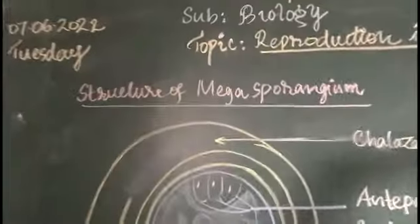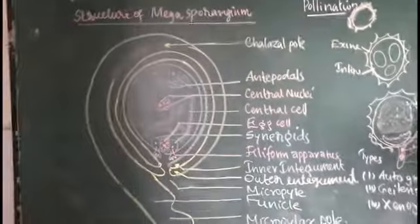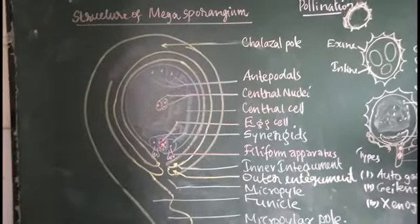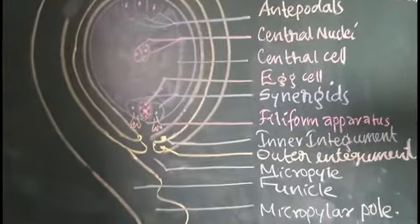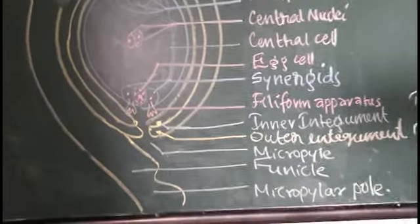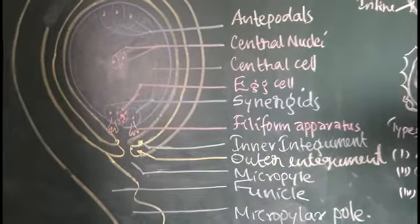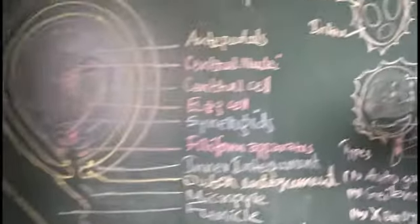You can see a brief of what we are going to do today. Structure of Megasporangium, a typical structure of an Anatropous ovule, which we have seen in the previous video in comparison with the mango seed.